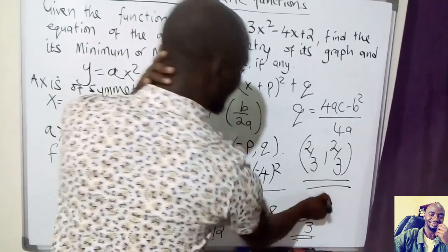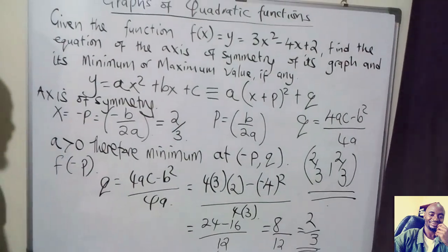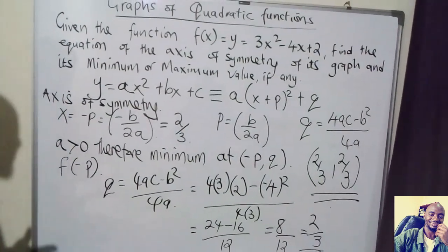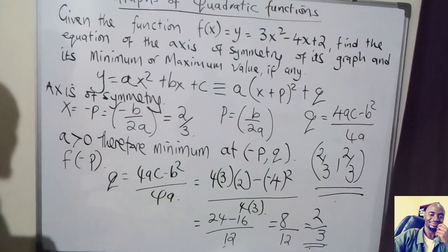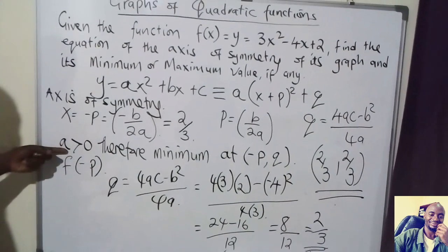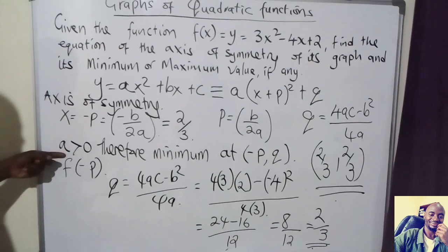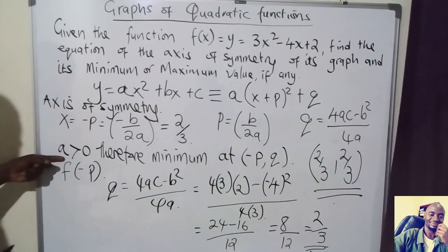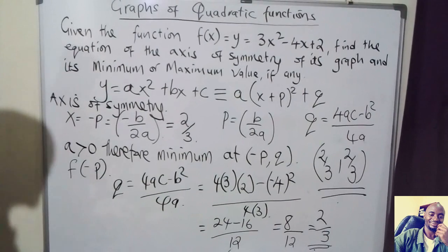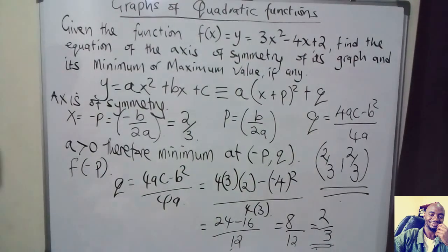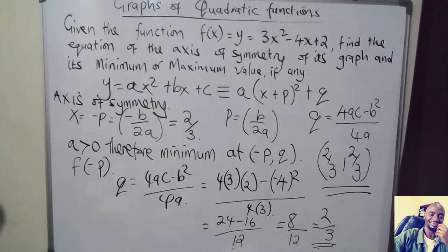So the coordinates of the minimum turning point are 2/3, comma, 2/3. To find the maximum turning point, you would follow the same procedure, but remember to check the coefficient of x squared to determine whether it is a minimum or maximum. For more videos, subscribe to my YouTube channel and don't forget to like this video. Thank you.